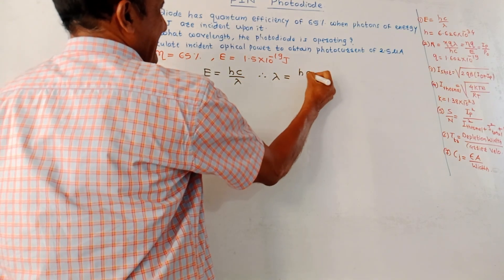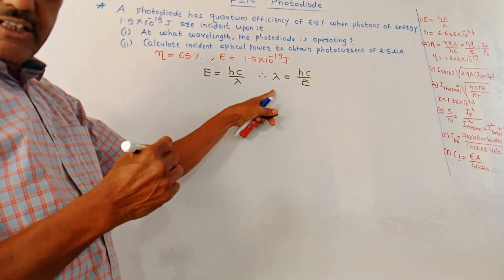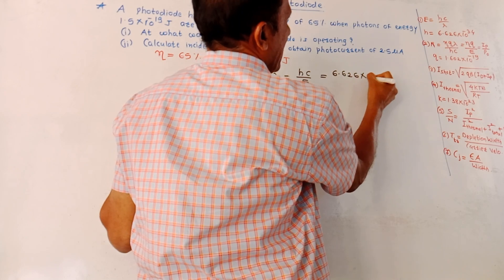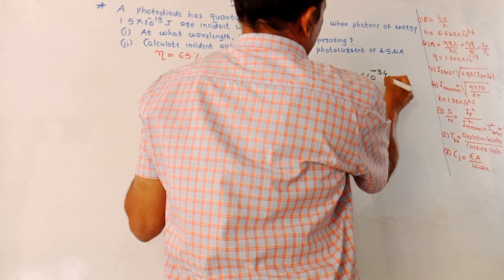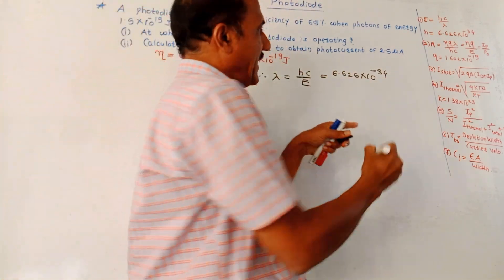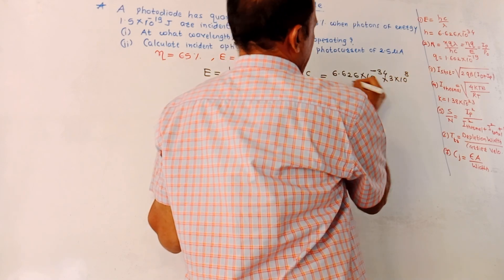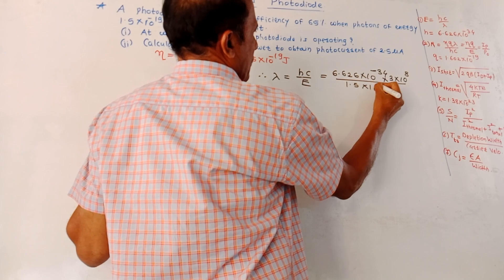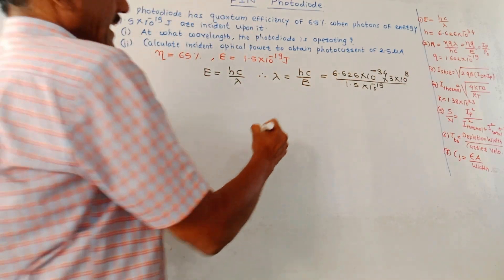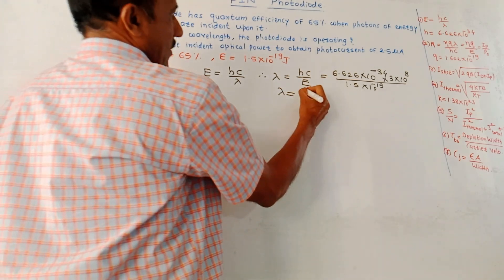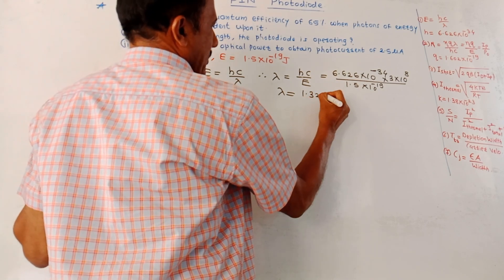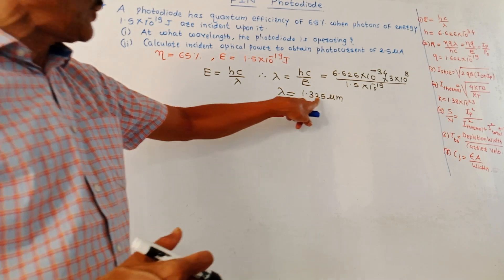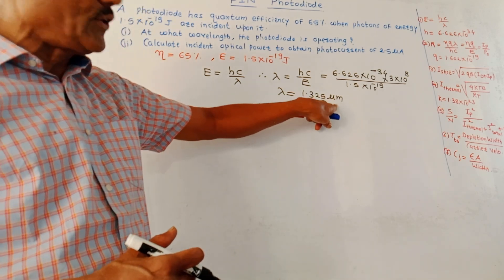Rearranging, the operating wavelength λ = hc/E. Substituting h = 6.626 × 10⁻³⁴, c = 3 × 10⁸ m/s, and E = 1.5 × 10⁻¹⁹ J, the answer for λ is 1.325 micrometers, i.e., 1.325 × 10⁻⁶ m.